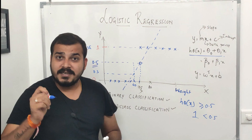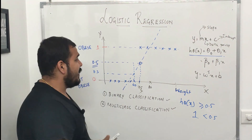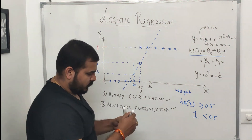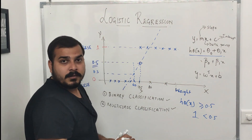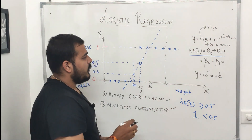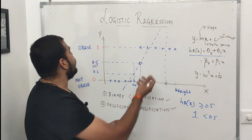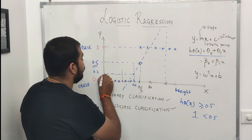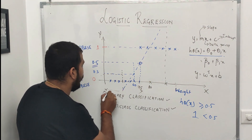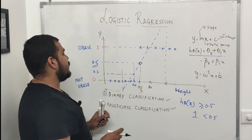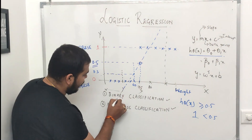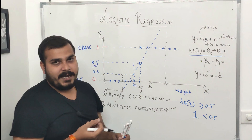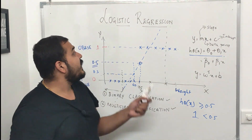So what is the use of logistic regression? With a straight line I can classify: if a new data point gives a value greater than 0.5, the person is obese; if negative or below 0.5, the person is not obese. The line extends in both directions and I can find any point. So why exactly do we need logistic regression if a straight line seems to work?